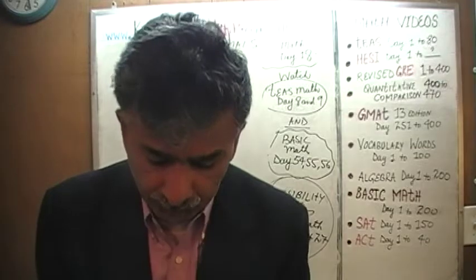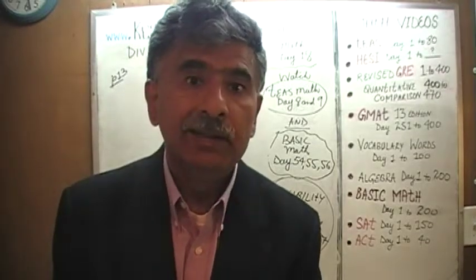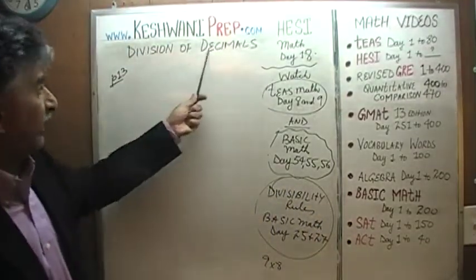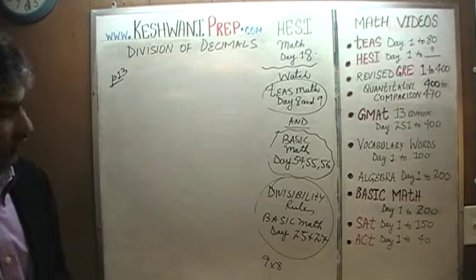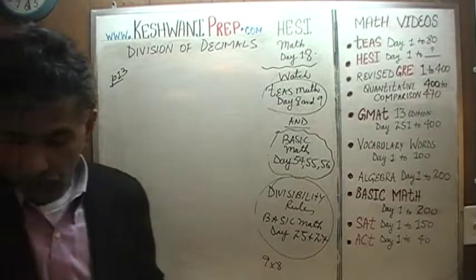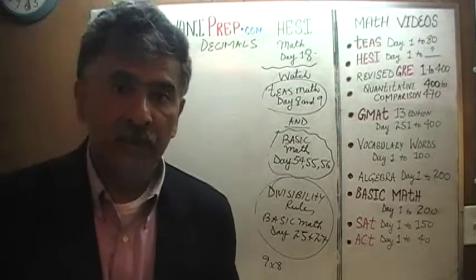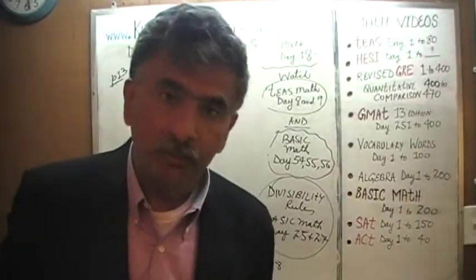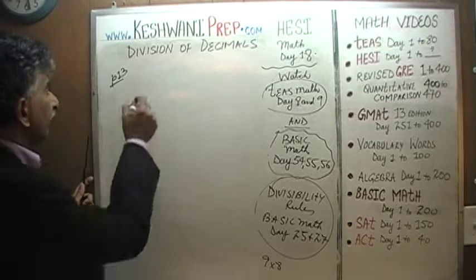Right now we are in the process of solving problems having to do with the notion of division of decimals. We are on page number 13, in the midst of solving the sample problems. We have done one through five already. We will pick up today from number six.